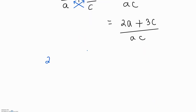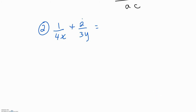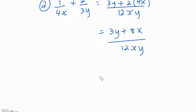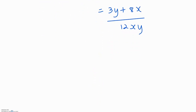For our second example, we have 1 over 4x plus 2 over 3y. Multiply the denominators again to find a common denominator: 4x times 3y — 4 times 3 gives you 12, and x times y gives you xy. Cross multiplying: 1 times 3y is 3y, plus 2 times 4x gives you 8x. Just copy the denominator 12xy.